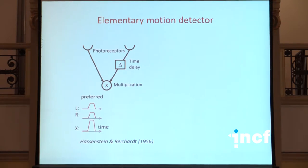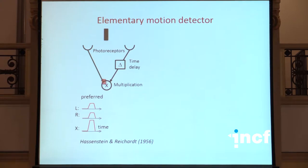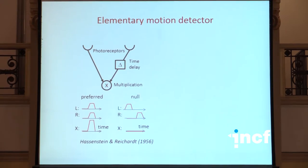This doesn't happen when the motion is in the opposite — so-called null — direction, because the signal from the left photoreceptor gets extinguished in the multiplication unit before the signal from the right photoreceptor arrives, producing no output, leading to directional selectivity.